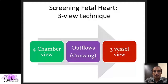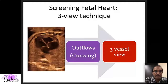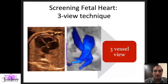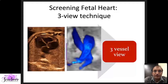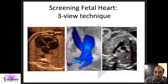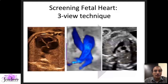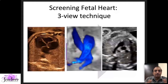What I'm going to focus on today is just three views of the heart. The first is the four chamber view, which everybody should know how to obtain. The second is the outflow tracts — the left ventricular and right ventricular outflow tracts, which should be crossing each other. We should clearly demonstrate that the LVOT and RVOT cross each other. The third view is the three vessel view, and its extension is called the three vessel tracheal view, or the 3VT view.